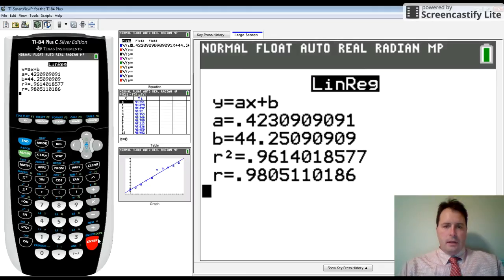As you can see, my slope is 0.42 roughly and my y-intercept is about 44.25. Now the R value below there that shows 0.98 shows this is a very strong association.